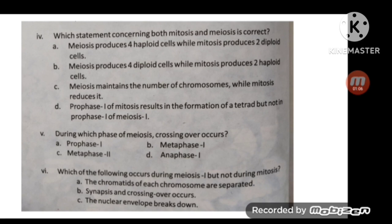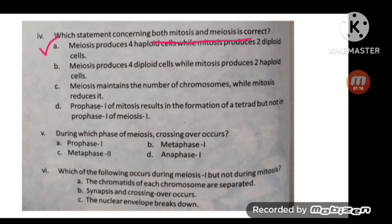The next MCQ: which statement concerning both mitosis and meiosis is correct? The correct option is A — meiosis produces four haploid cells while mitosis produces two diploid cells.